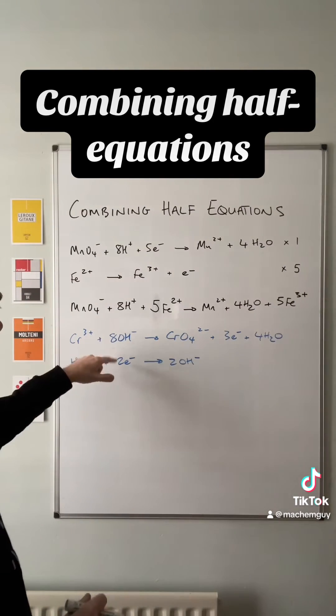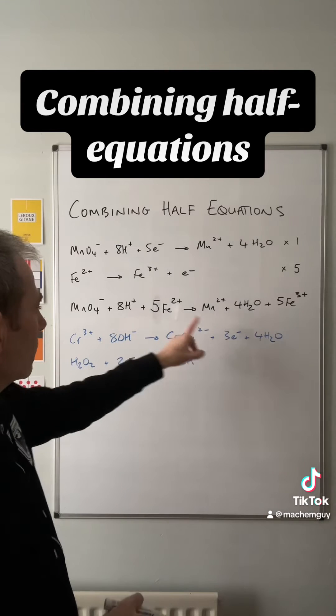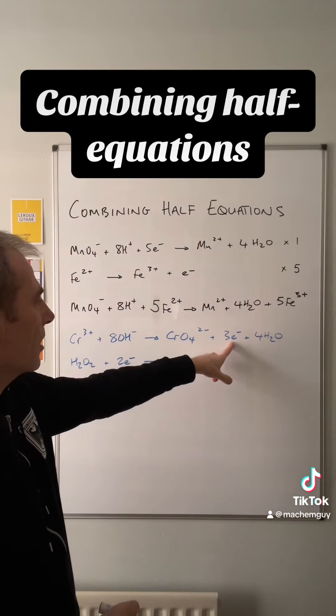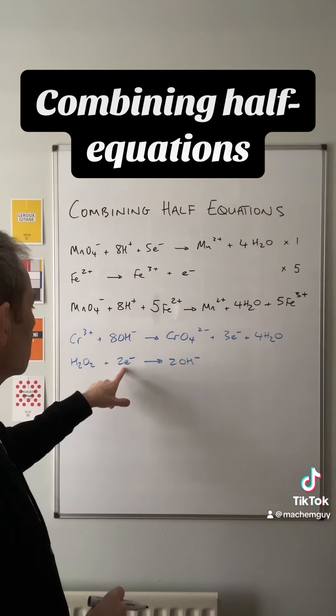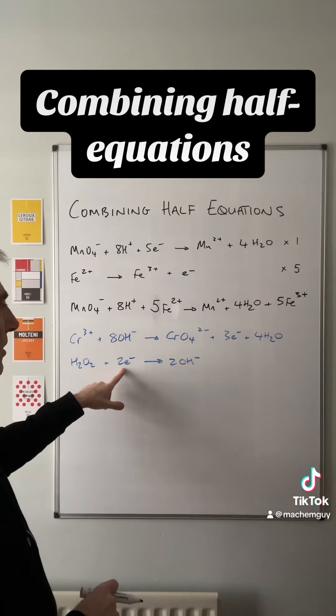So we've got these two half equations here. We're losing three electrons in the oxidation half equation and we're gaining two electrons in the reduction half equation.